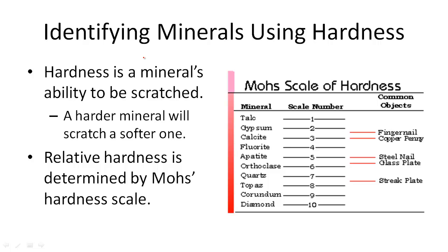There are some common objects over on the right hand side over here that kind of give you an example. So calcite is a scale of 3 and that's going to be like your fingernails, whereas down here at number 6 that's going to be about as hard as a glass plate. So that can kind of give you an example of the different hardness values.